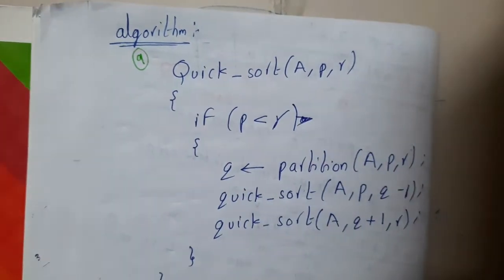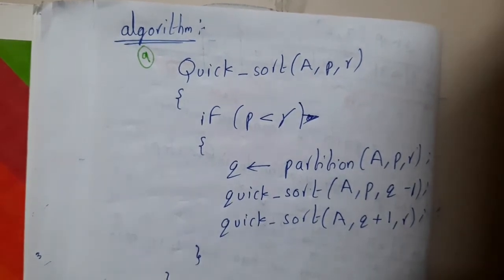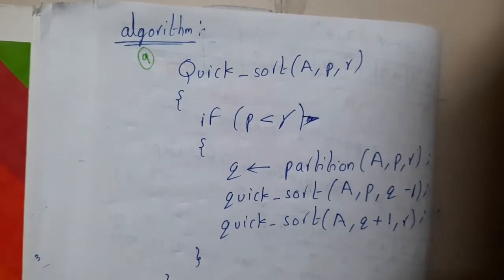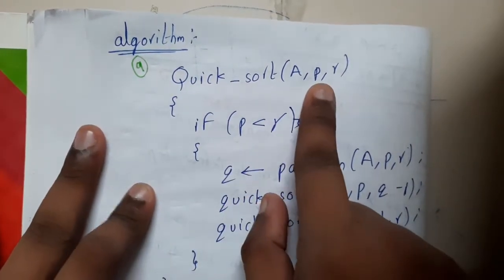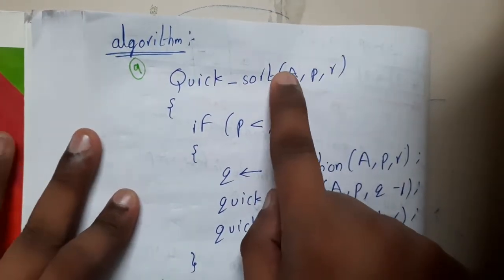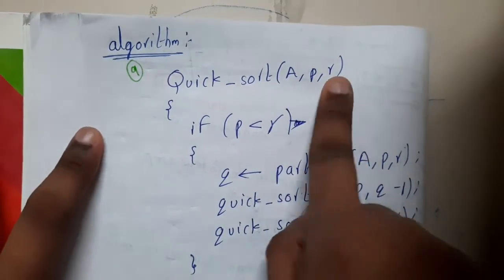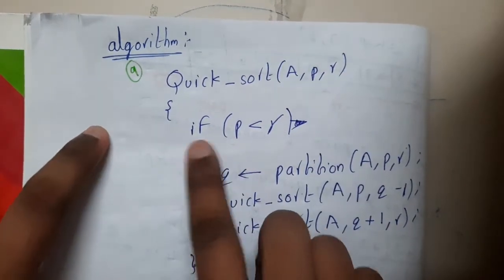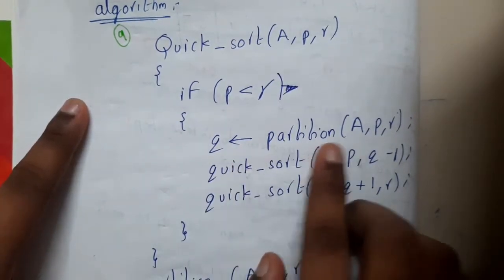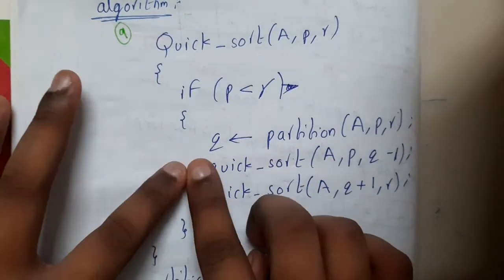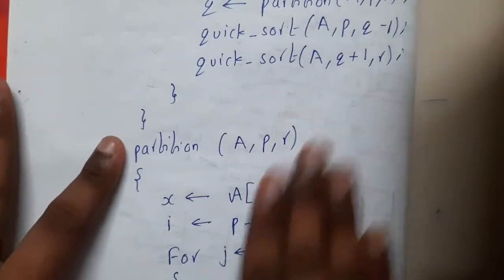Quicksort also comes under divide and conquer. Basically here also you'll be dividing the problem into multiple parts and solving it. Quicksort takes array A, index p as the first value index, and r as the last value index. If p is less than r you'll be continuously partitioning it, dividing it into two parts.